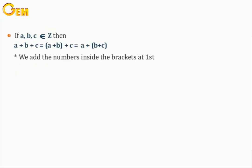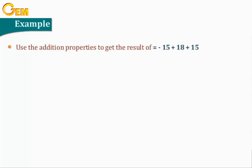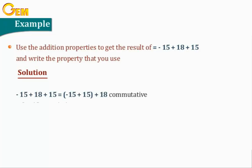Example: use the addition properties to find the result of negative 15 plus 18 plus 15 and write the property used. Solution: negative 15 plus 18 plus 15 equals the sum of negative 15 plus 15 added to 18 (commutative property), equals 0 plus 18 (associative property), equals 18 (identity additive element property).